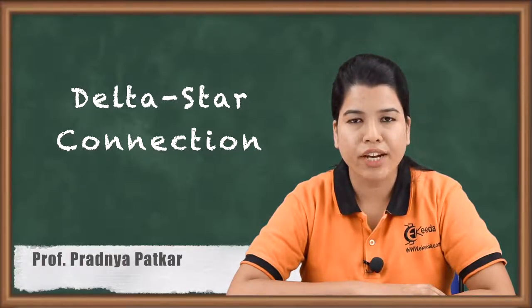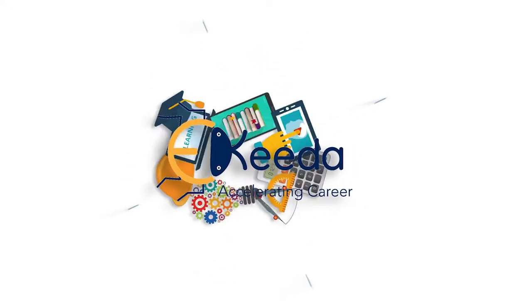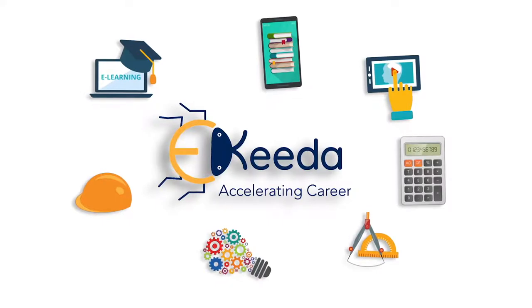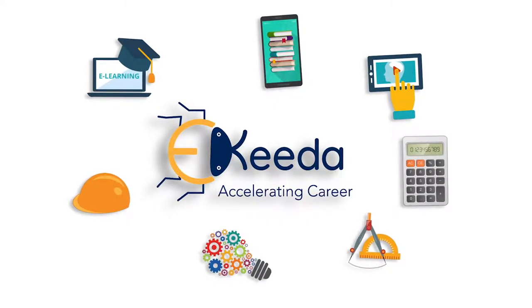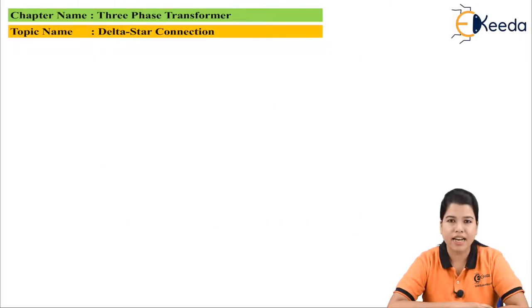In this video we are going to study about delta-star connection. Delta-star connection means that the primary winding of the transformer is connected in delta whereas the secondary winding of the transformer is connected in star.